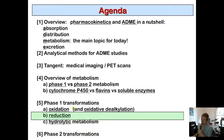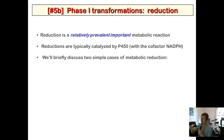Now let's talk about reduction transformations. After oxidation and oxidative dealkylation, reduction is one of the prevalent reactions that can happen to drugs. It's usually done with P450, which is typically an oxidizing enzyme, but in reductions it requires a reducing cofactor — usually NADPH.